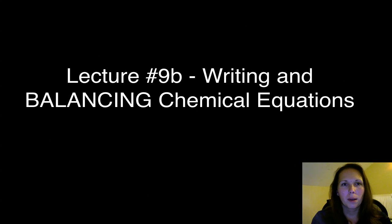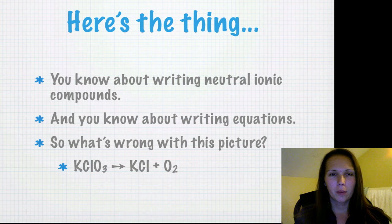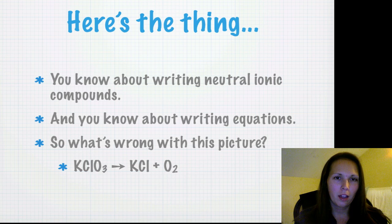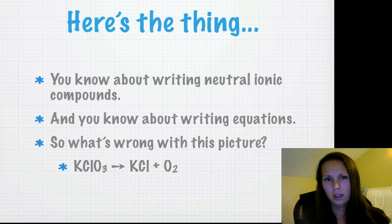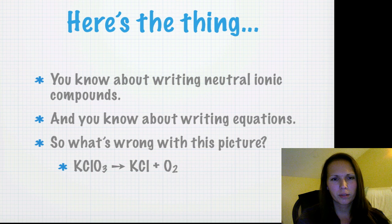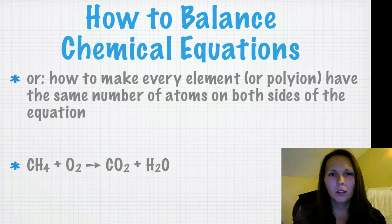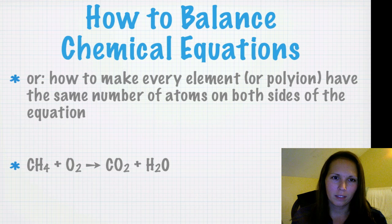Hello students. Back to tell you about the balancing piece of chemical equations. We've been working on the aqueous solutions lab and writing neutral ionic compounds. You also know how to write equations - how to write barium chloride plus strontium nitrate equals this. What we're going to look at is how to balance chemical equations: how to make every element or polyion have the same number of atoms on both sides of the equation.